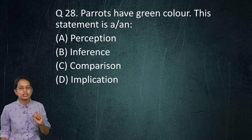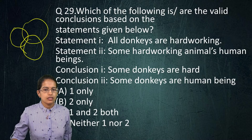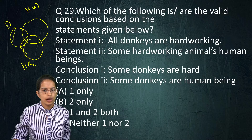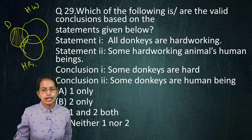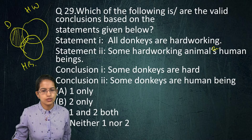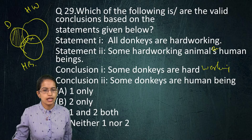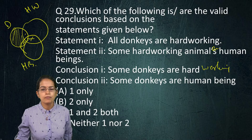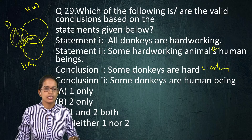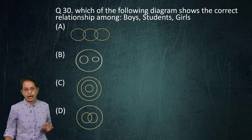Next is a syllogism problem involving donkeys, hard-working animals, and human beings. All donkeys are hard-working, so I remove that region. Some hard-working animals are human beings — I put a cross there. I can conclude that some donkeys are hard-working, but 'some donkeys are human beings' cannot be concluded, as donkeys may lie outside the human beings region. Only conclusion one is valid. Refer to the syllogism video we have covered.